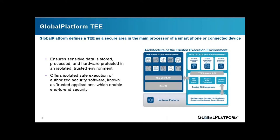Global Platform defines a TEE as a secure area of the main processor in a smartphone or any connected device. It ensures that sensitive data is stored, processed and protected in an isolated, trusted environment. The TEE's ability to offer isolated, safe execution of authorized security software, known as Trusted Applications, enables it to provide end-to-end security by enforcing protected execution of authenticated code. Confidentiality, authenticity, privacy, system integrity and data access rights are the main values of this environment. Compared to other security environments on the device, the TEE also offers high processing speeds and a large amount of accessible memory.